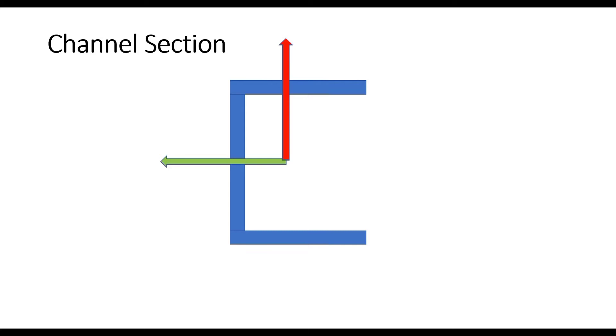Now we will consider how the channel section is oriented about the local axis system. Again, we can see that the local Z and local Y will be arranged like this. The local X axis is coming out of the screen towards you. Local Z will be the major principal axis and the local Y will be the minor principal axis. In this case, the channel is a monosymmetric section, and thus only the major principal axis — which is the local Z — will be the axis of symmetry, while the local Y represents the minor principal axis, as the major and minor principal axes are separated by a right angle.